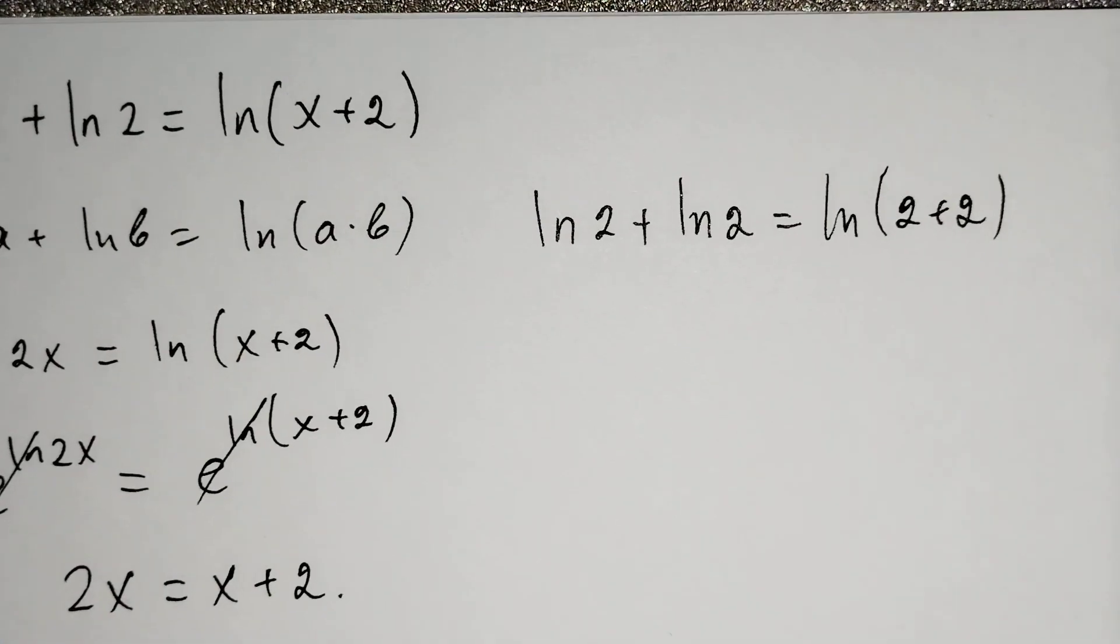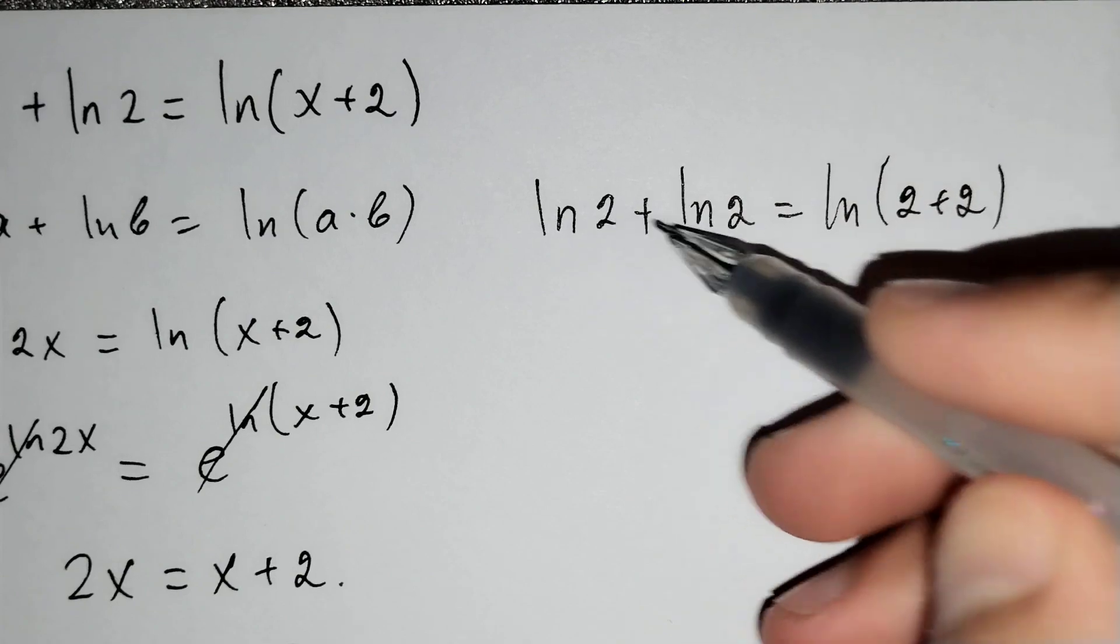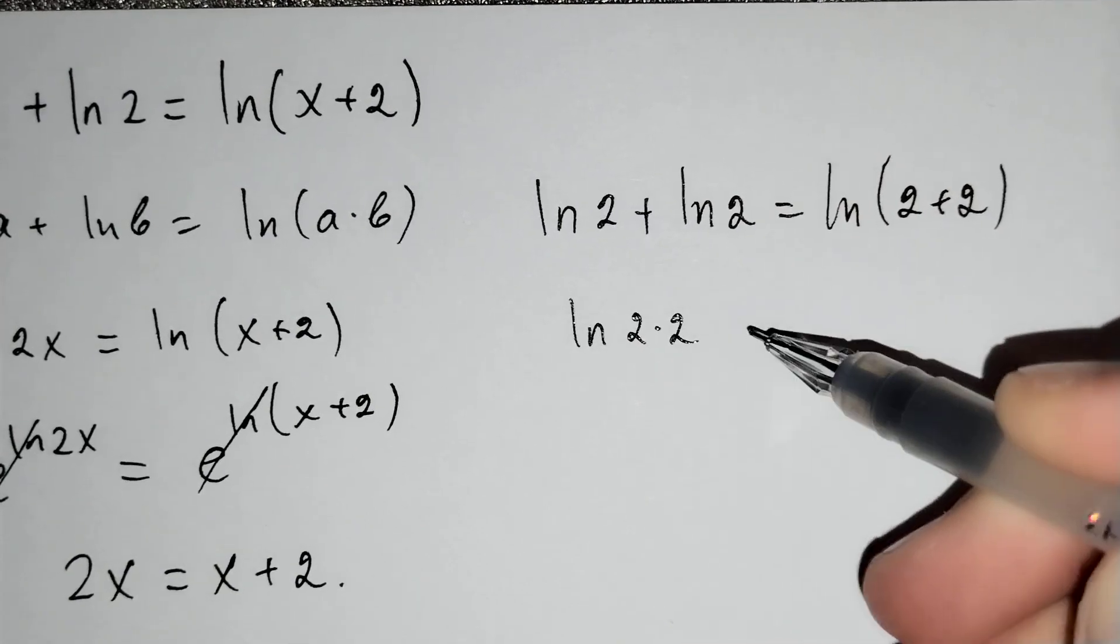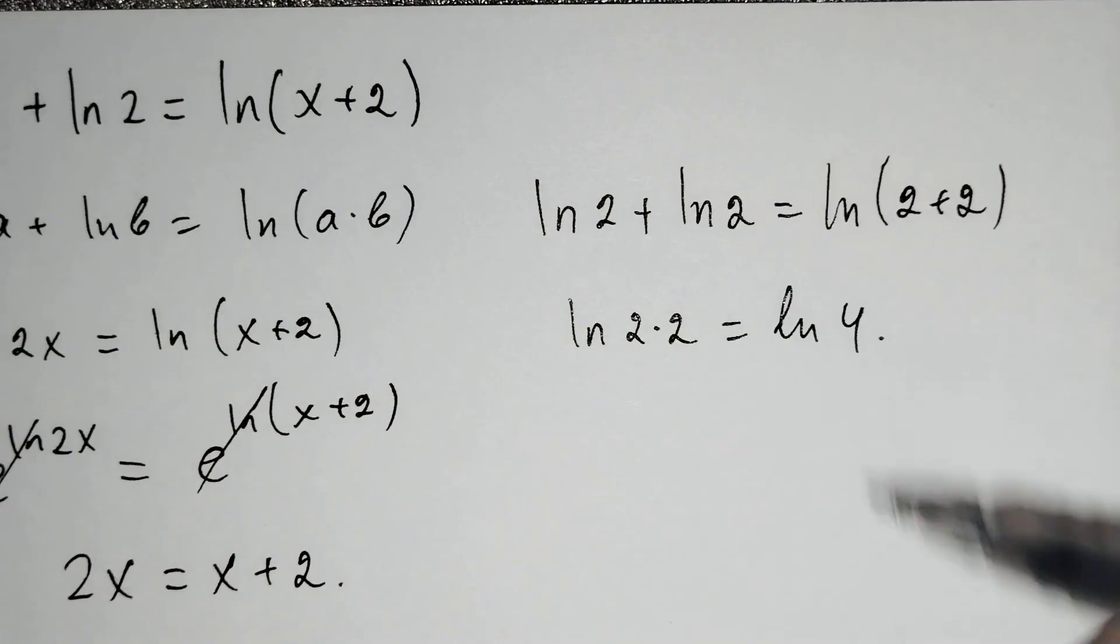Is it true or not? This is of course true because ln 2 plus ln 2 equals ln of 2 times 2, and this is equal to ln 4. This is a true equality.